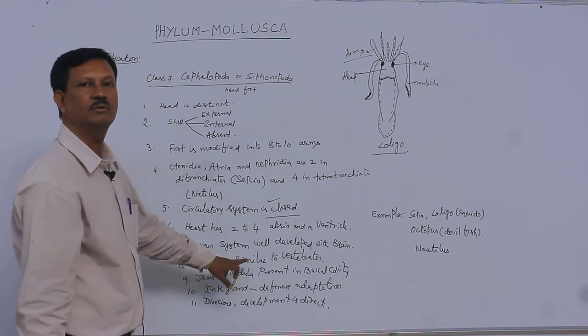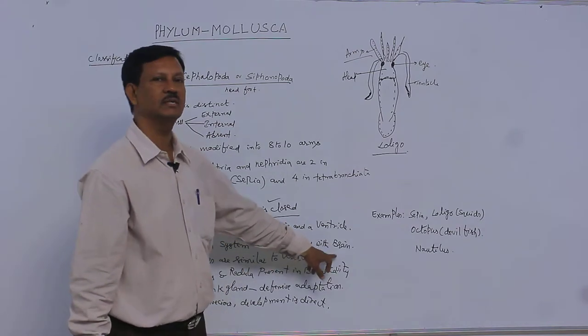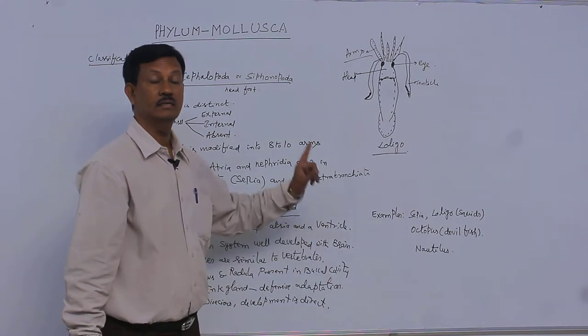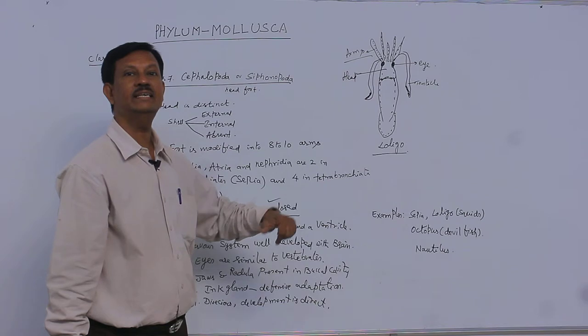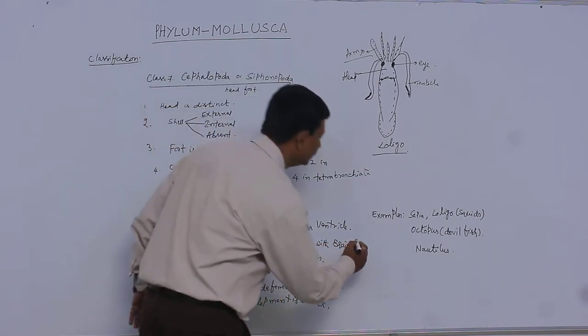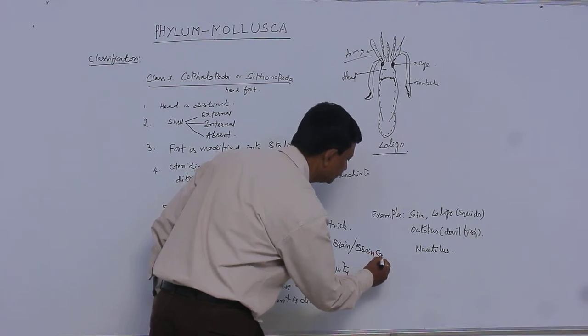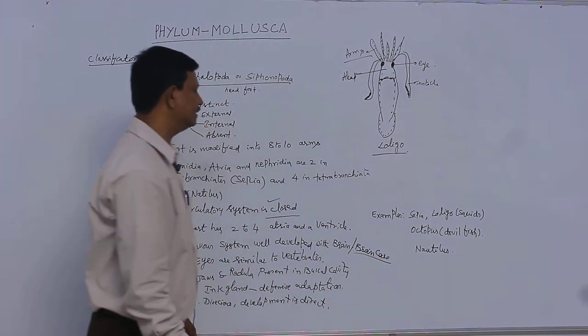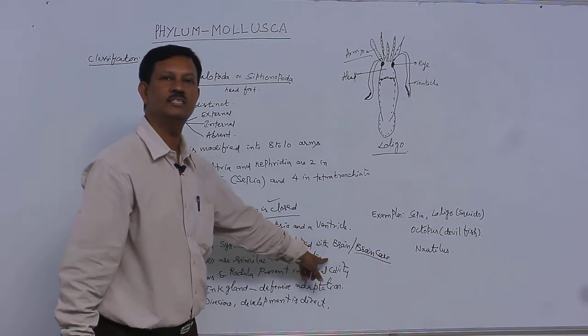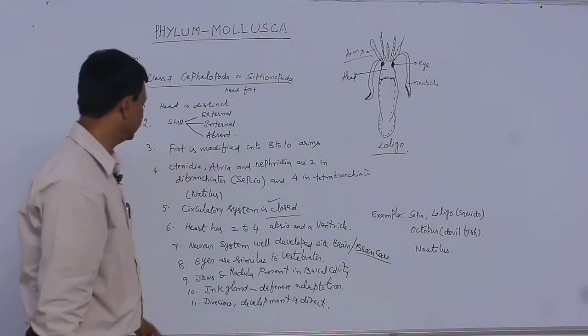The nervous system is well developed, and the brain is present at the anterior end. The brain is found in a brain case or brain box. This is a skull-like structure that gives protection to the sensitive part of the brain.